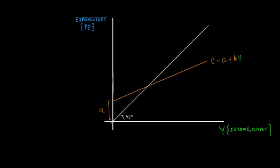The slope of this line is the coefficient b, which we call the marginal propensity to consume — the fraction of each additional dollar of income that is spent on consumption goods. The marginal propensity to consume is greater than zero and less than one across the economy as a whole. For reference, the slope drawn here is approximately 0.5.